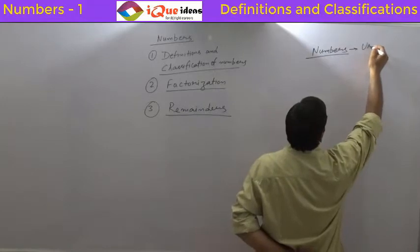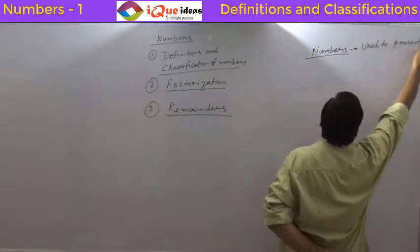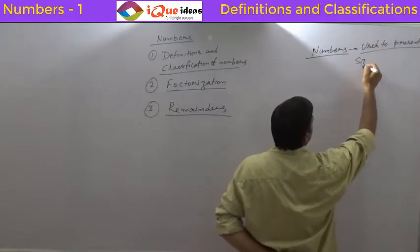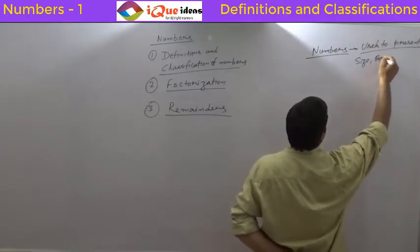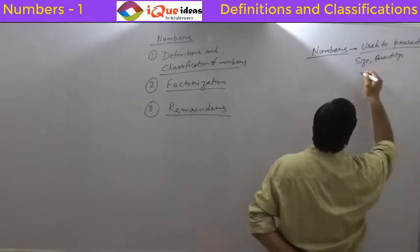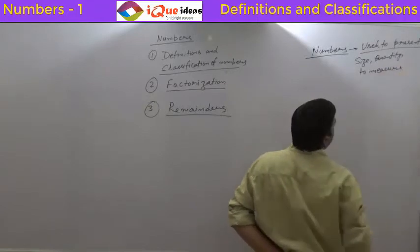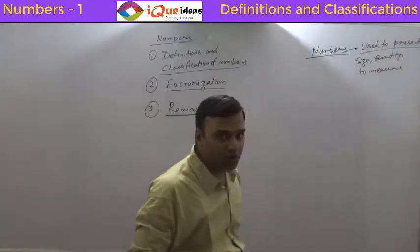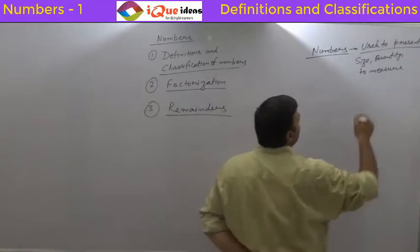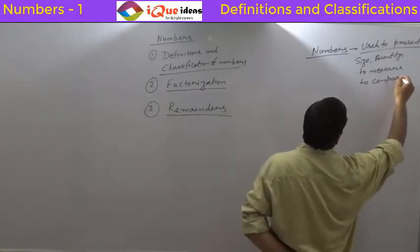Numbers are basically used to present size, quantity, or to measure what we have measured or counted. Two things we can compare them to compare, we use numbers.